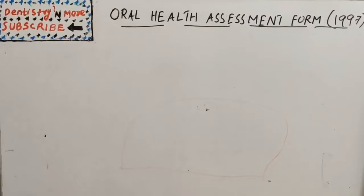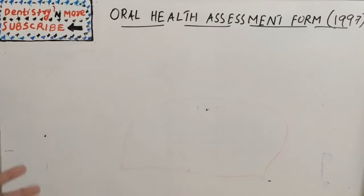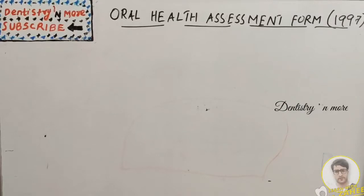Hello everyone, welcome back to another session in dentistry. This topic is the Oral Health Assessment Form. The name gives an idea — it assesses oral health completely. Usually, parts of oral health are assessed using various oral indices such as oral hygiene index, plaque index, gingival index, bleeding index, dental caries index, or periodontal index. But this is a form or pro forma which assesses the entire oral health. It is a very common tool used by researchers, universally accepted, valid and reliable because it was put forward by the WHO.